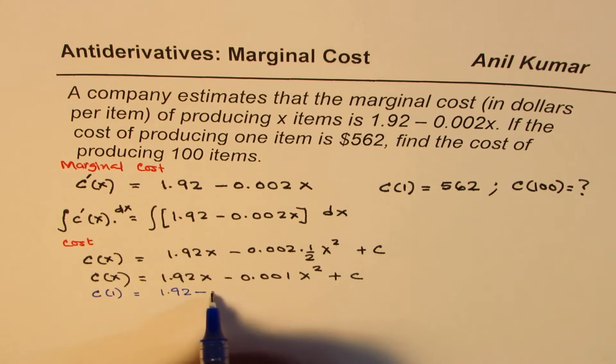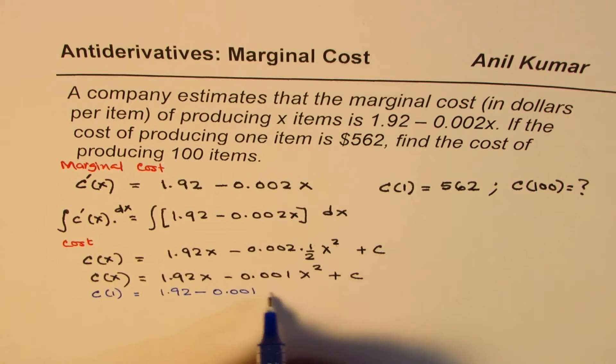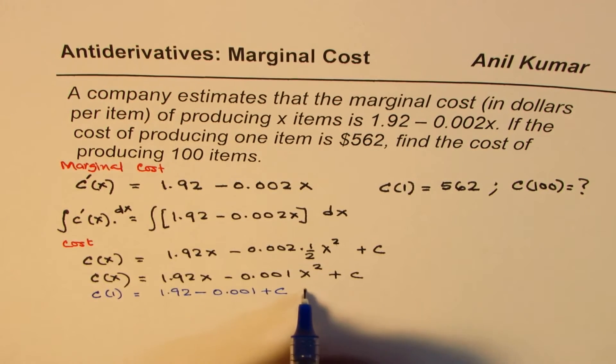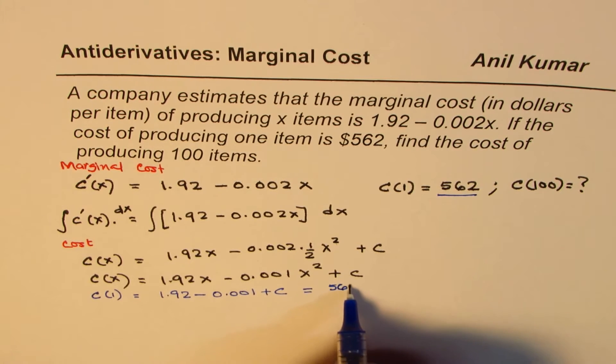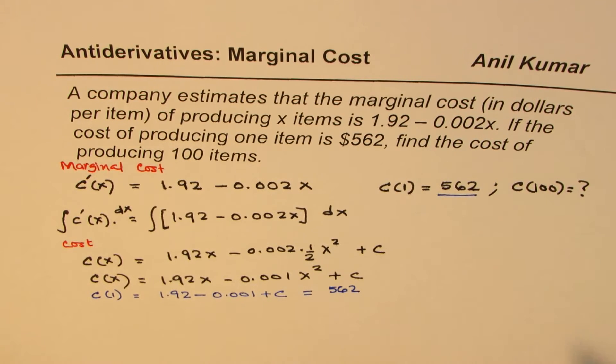We get 1.92 minus 0.001 plus C, and this equals 562. Now from here we can find what C is.